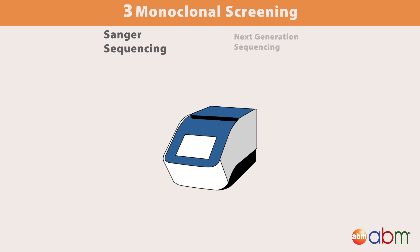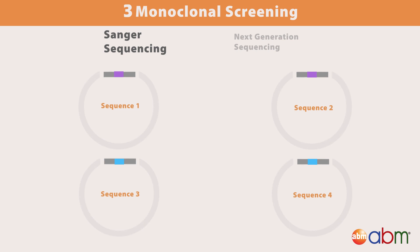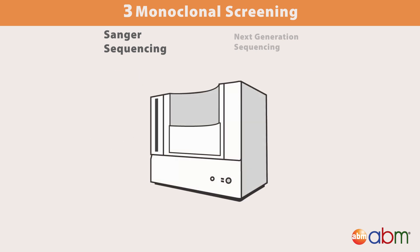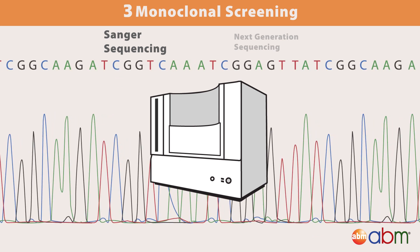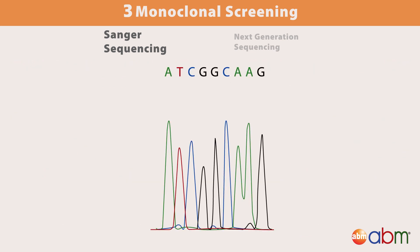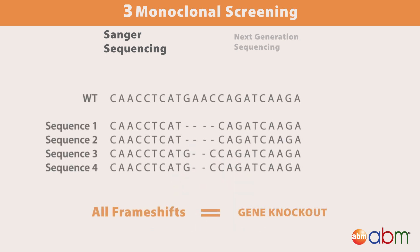For monoclonal validation by Sanger sequencing, the typical method is: 1. PCR-amplify the targeted region from each monoclone. 2. Clone the amplicons into a vector. 3. Sanger sequence. This way, each vector will contain only one gene copy, which will generate a clean trace when sequenced. A gene is considered to be fully knocked out if all sequences from the monoclone show frameshift mutations.